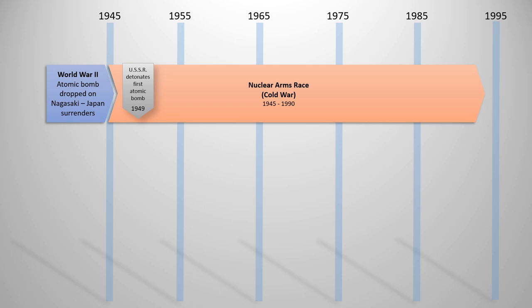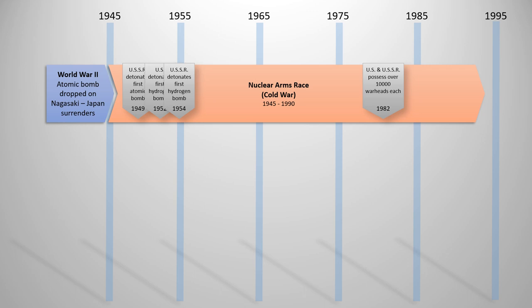Shortly after that, in 1952, the United States detonated the first hydrogen bomb — a much larger and more powerful version of an atomic bomb. A few years later, the Soviet Union also developed their first hydrogen bomb. By 1982, both the US and Soviet Union possessed over 10,000 warheads each. And by 1990, there was finally a Conventional Forces Treaty in Europe that began nuclear disarmament.